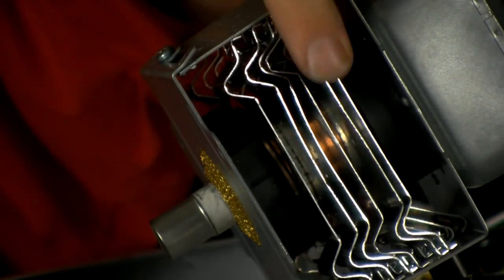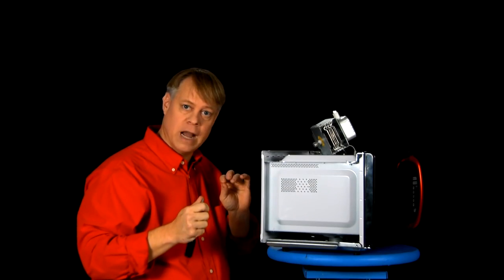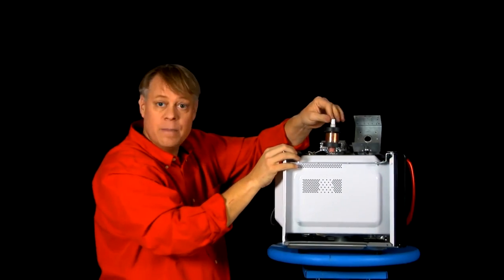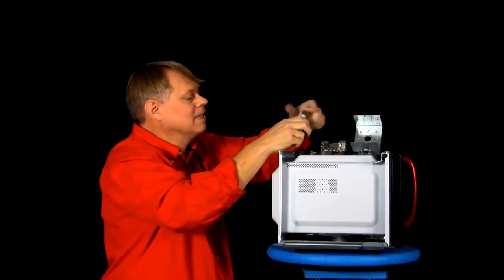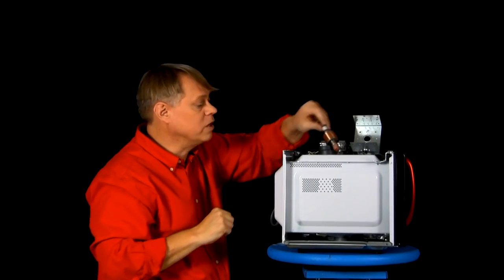The vacuum tube is inside here. These are cooling fins, thin pieces of metal that dissipate the heat as the magnetron operates. The key parts are these two magnets and the vacuum tube. Now, I have another one so you can see the inside.